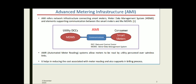The general schematics block diagram shown here depicts the basic functionality. It consists of MDMS managed by the utility, and a data and control center from the utility end. The entire AMI is connected between the MDMS and smart meter through communication — wireless or any type of communication technologies.